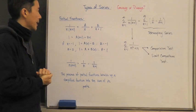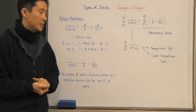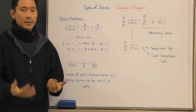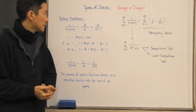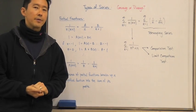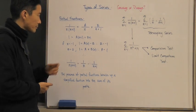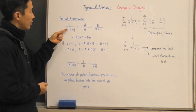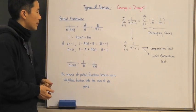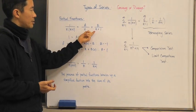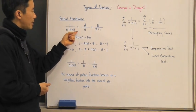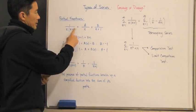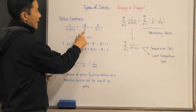Now we're going to look at a process called partial fractions. Rather than describing it abstractly, let's look at an example. Say we have the fraction one over n times n plus one. I'm going to break that fraction up into two fractions, using the factors of the denominator: one factor n under A, and the factor n plus one under B.